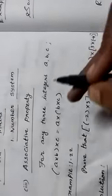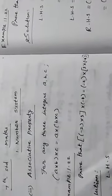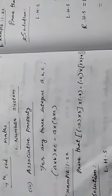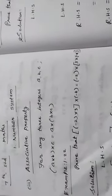In this class we learned about associative property and multiplicative identity. The remaining properties we will see in the next class. Thank you.